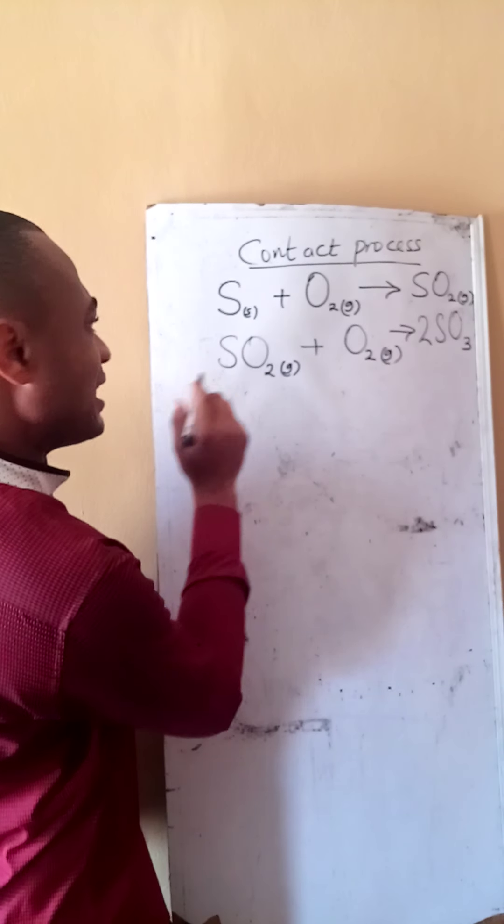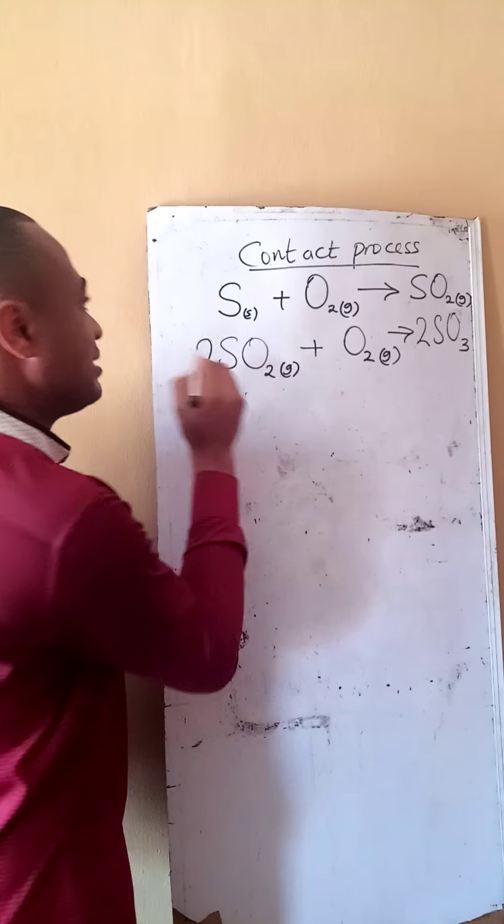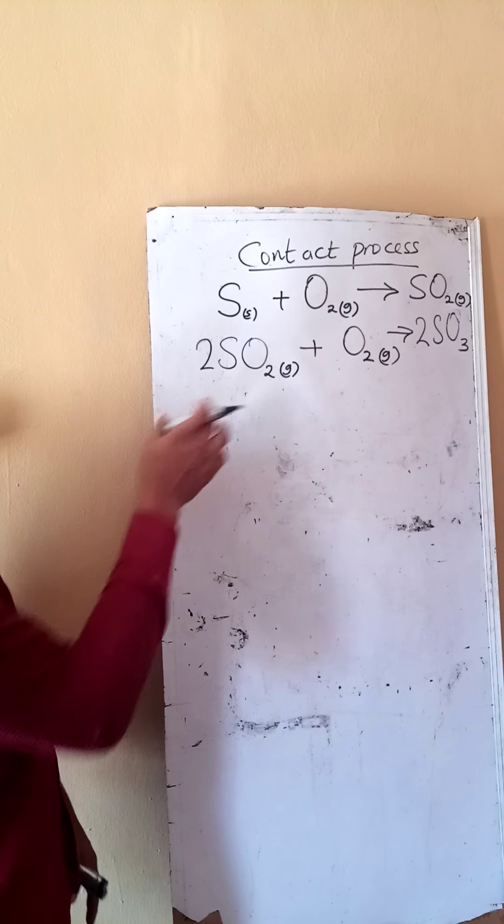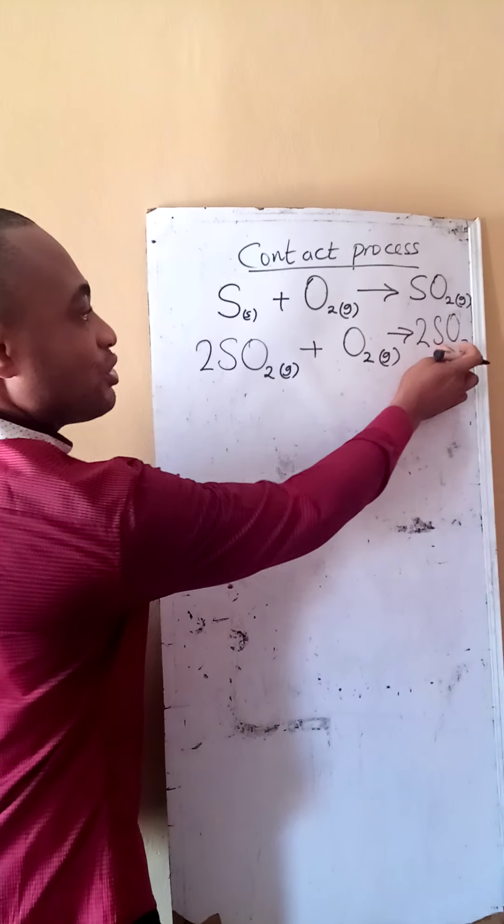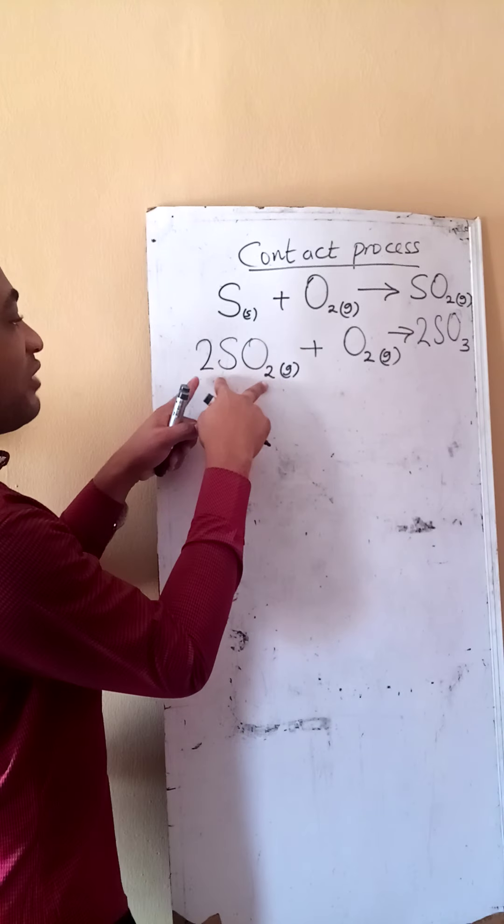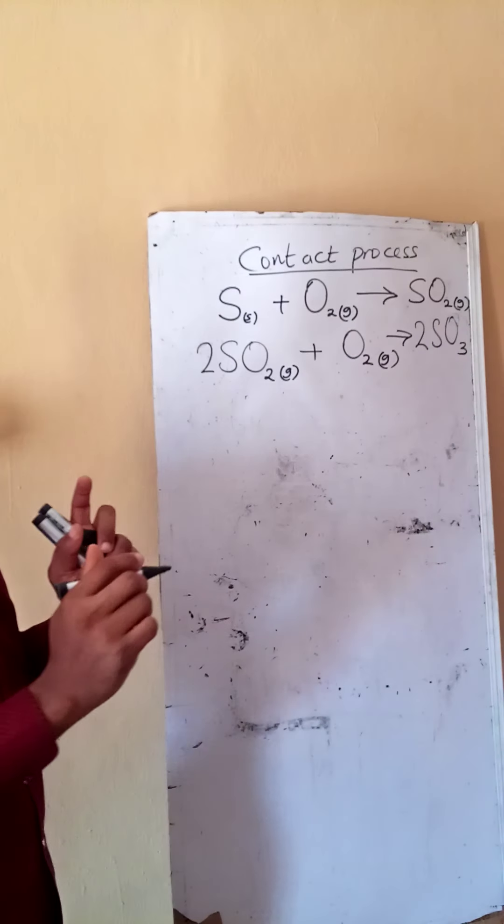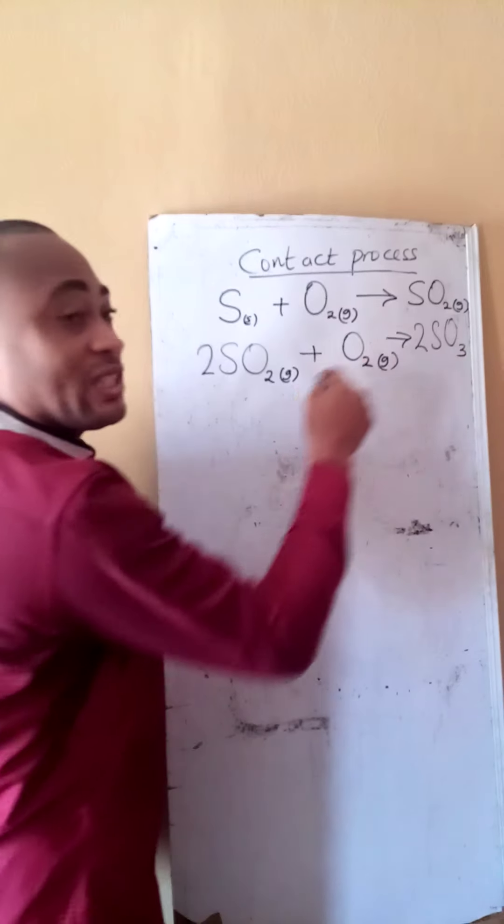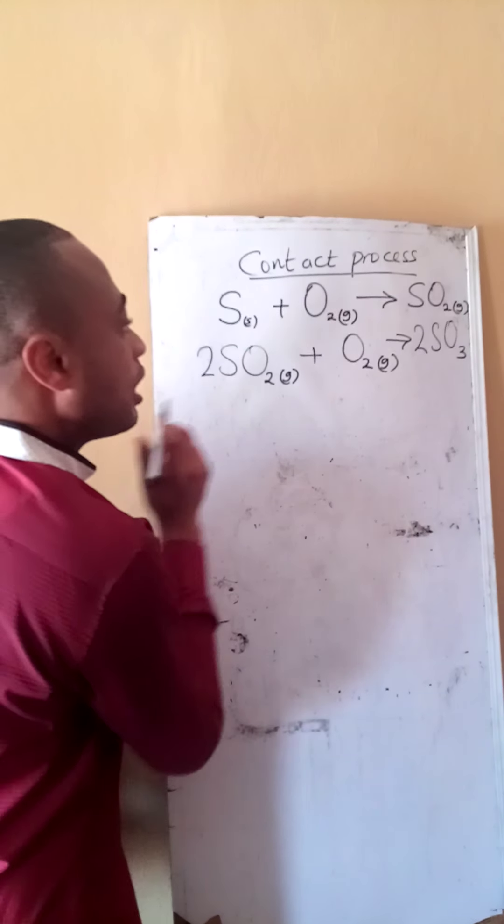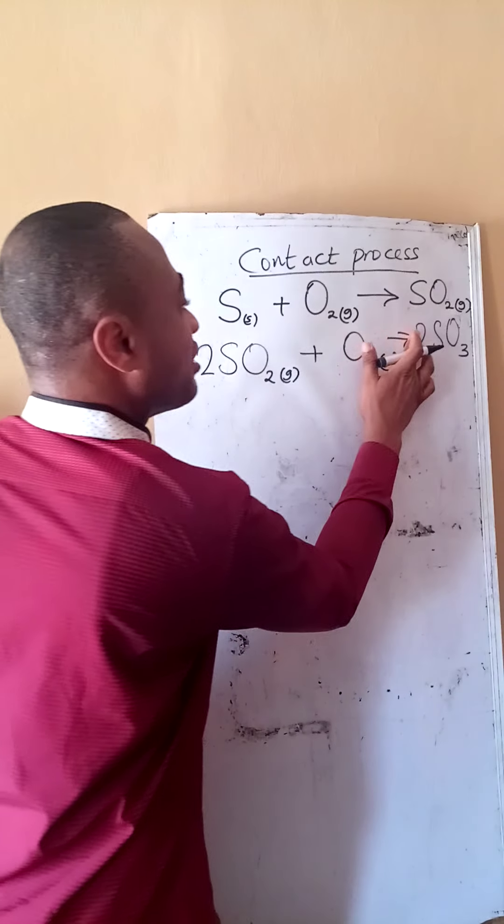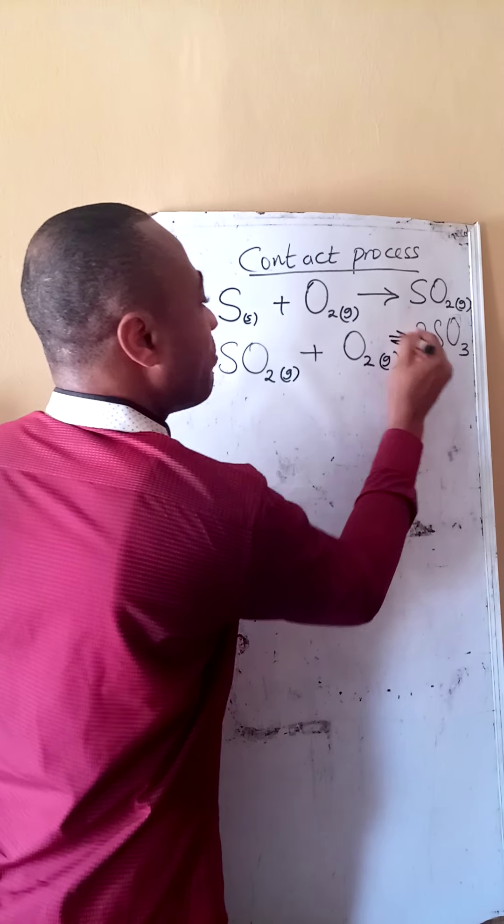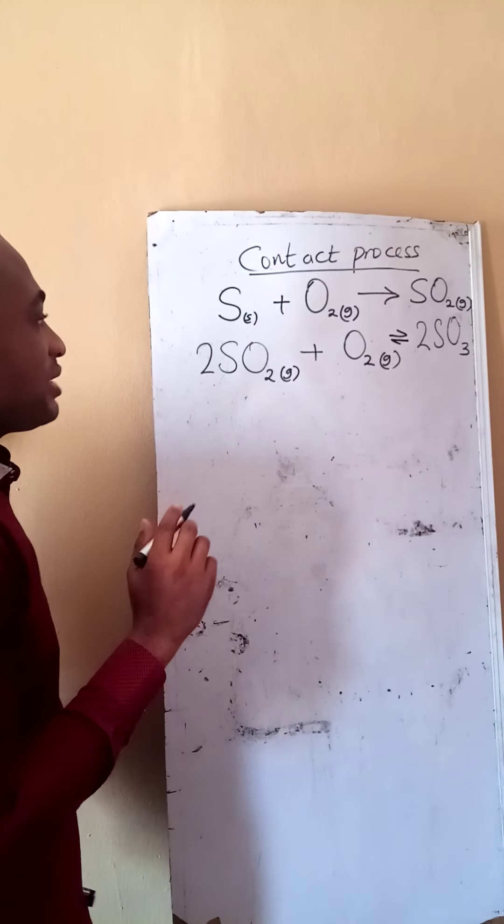Is our equation balanced? Let's see. I don't think so. Insert a 2 at this point. So sulfur is 2, sulfur is 2, oxygen 4 plus 2 is 6, and that is balanced. Take note this reaction is basically forward and backward, we will come to that later.